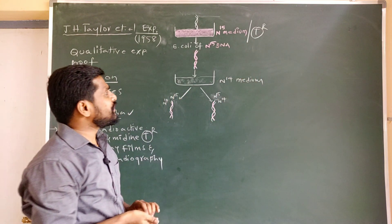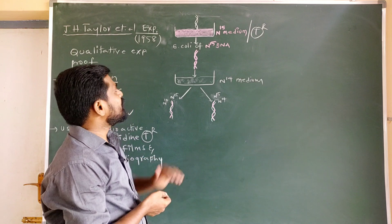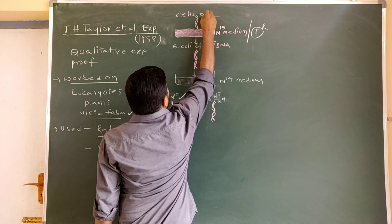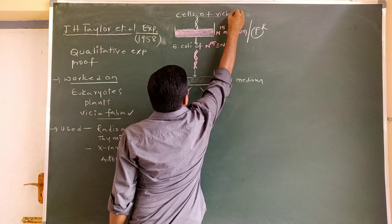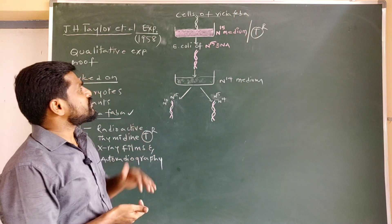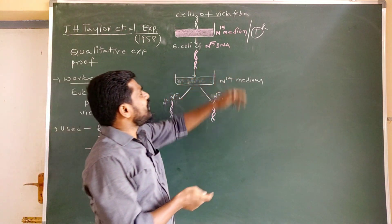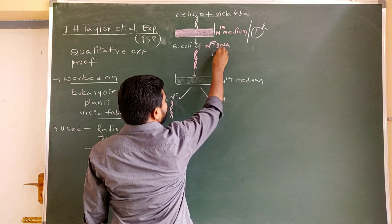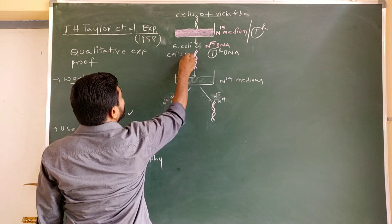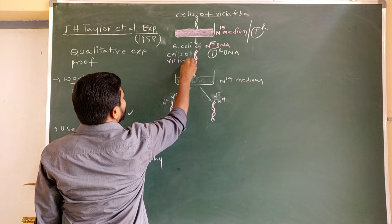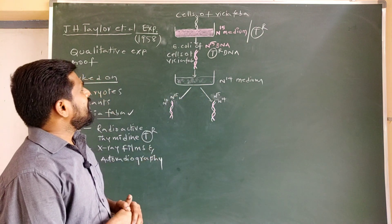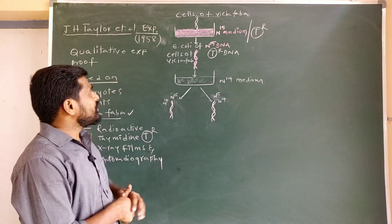On this radioactive thymidine-containing medium, they grew the cells of Vicia faba for several generations, so that they made all the cells of Vicia faba to have radioactive thymidine DNA.